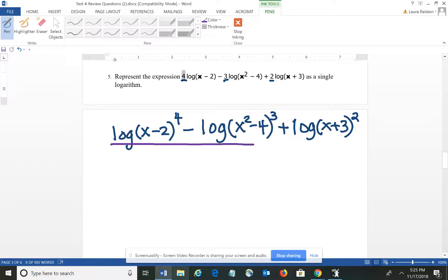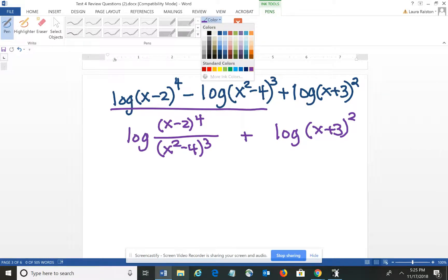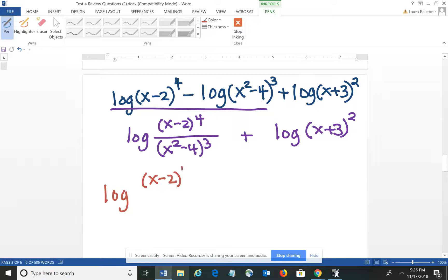And then if I work left to right, as we do when we're following order of operations, I have log of (x - 2) to the 4th minus (x² - 4) to the 3rd. Subtraction converts to division. So I would have log of (x - 2) to the 4th divided by (x² - 4) to the 3rd plus log of (x + 3) squared. Again working left to right. The addition becomes multiplication, so I'm going to have log of (x - 2) to the 4th over (x² - 4) to the 3rd times (x + 3) squared.